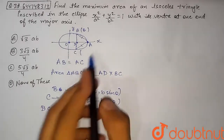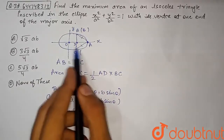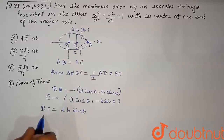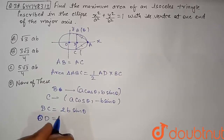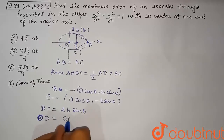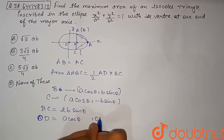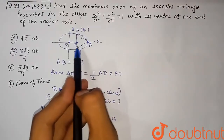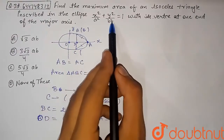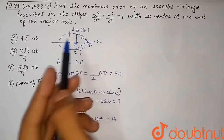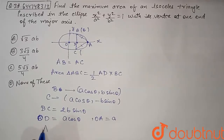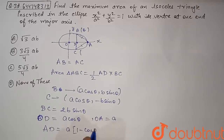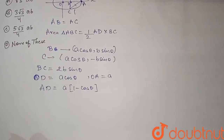Now we find AD. The point D has x-coordinate a cosθ (same as B and C), and point A is at (a, 0), the end of the major axis, so OA = a. Therefore, AD = a − a cosθ = a(1 − cosθ).